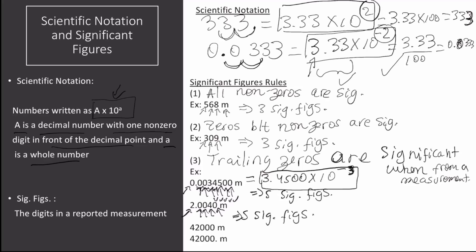The next two numbers are 42,000 meters. The first one has two significant figures, and the second one has five significant figures. The difference is that the second one has a dot at the end. If we get technical, zeros in a whole number that are not in between non-zeros are significant if there is a dot at the very end — like in this case. But if there is no dot at the end, then they become irrelevant, and there are only two significant figures. Note: if your textbook says to ignore dots at the end and that zeros in whole numbers should be relevant regardless, then this number should have five significant figures.